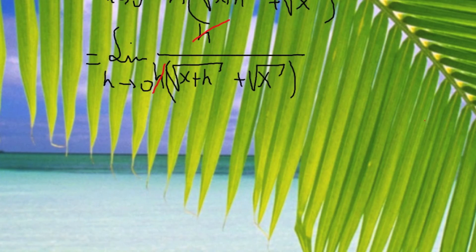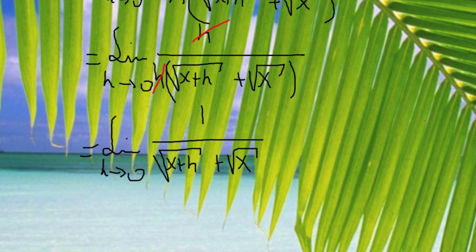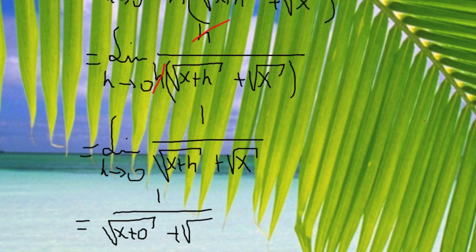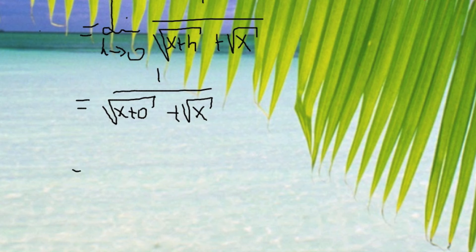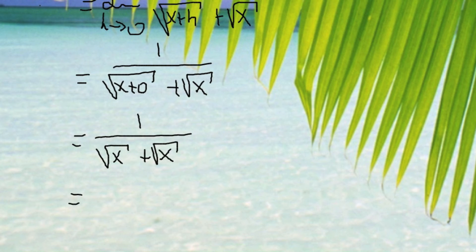So I am left with limit as h goes to 0 of 1 divided by square root of x plus h plus square root of x. Now there's no problem plugging h equals 0, so this limit evaluates to 1 over square root of x plus 0 plus square root of x, which is 1 over 2 times square root of x.